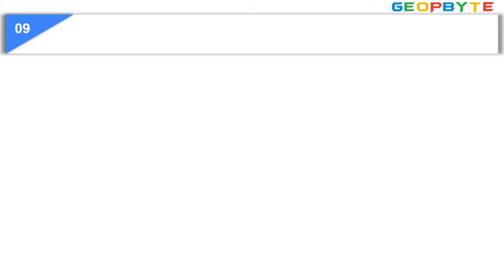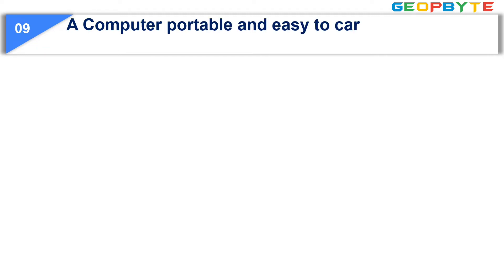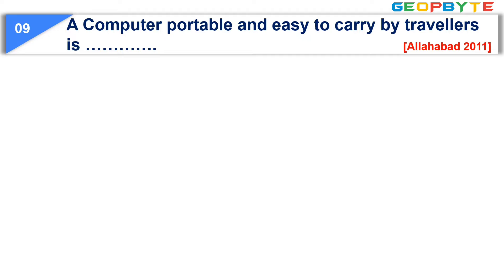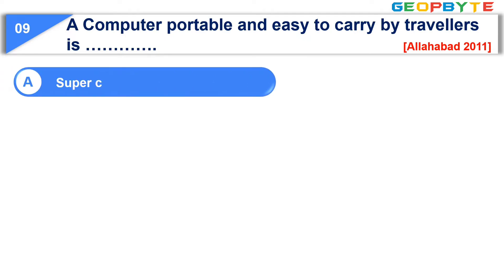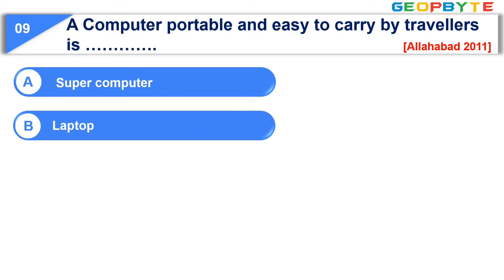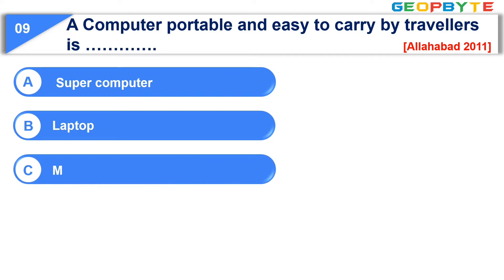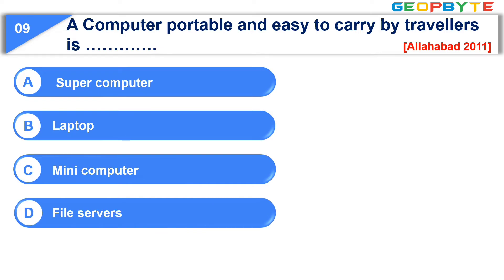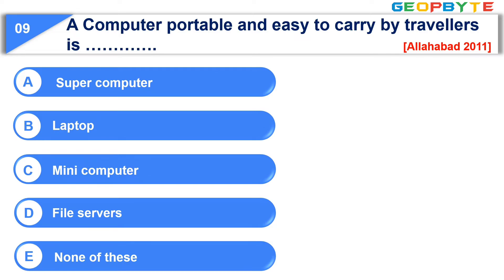Moving to question number nine. A computer portable and easy to carry by travelers is. Option A: Super computer. Option B: Laptop. Option C: Mini computer. Option D: File servers. Option E: None of these. The correct answer is option B, Laptop.